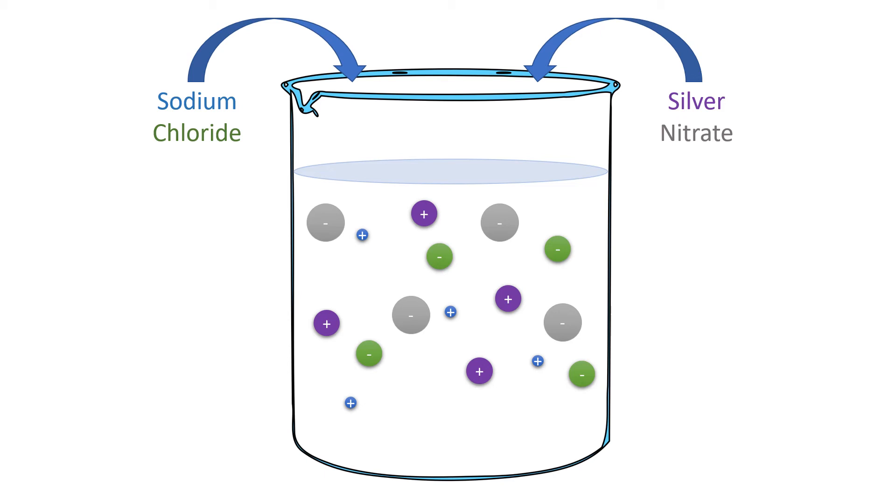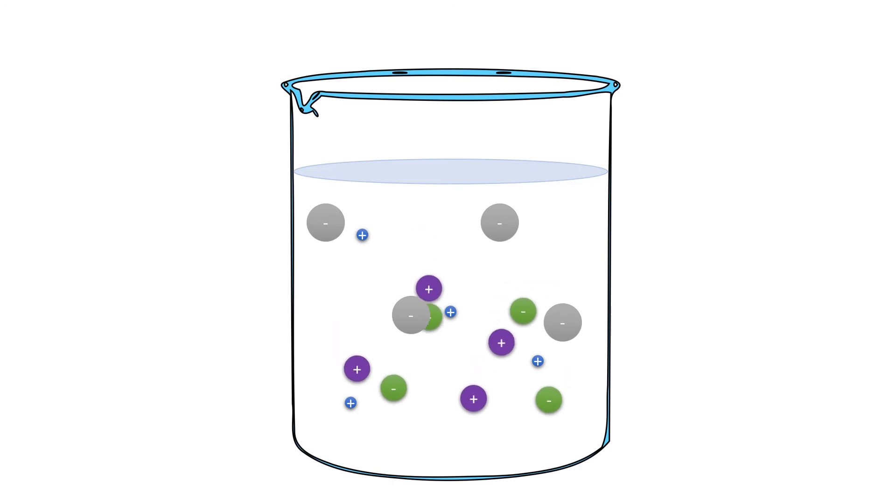And that happens to be the case with silver ions and chloride ions. So what happens in this example is the silver ions and the chloride ions are attracted to each other strongly enough to overcome the ability of the water to keep them apart. And so they bond together to form little crystals of silver chloride.